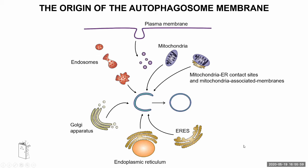Though there are many subcellular compartments involved in autophagosome biogenesis, the endoplasmic reticulum is still believed to be the king organelle that helps the growth of the isolation membrane. You can find or not find all the others, but the ER will always be there helping the isolation membrane and autophagosome to grow.